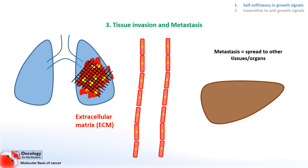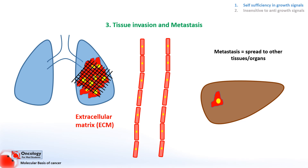To be able to grow and invade other tissues and ultimately spread to other parts of the body, the cells in the cancerous tumour have to be able to break away from the extracellular matrix, get into the bloodstream or lymphatic system, exit the blood vessel, and settle in another organ. This isn't a random process — it's very complex and involves the interaction of many different proteins, and it's mutations in the genes coding for these proteins that give the cells the ability to metastasise.